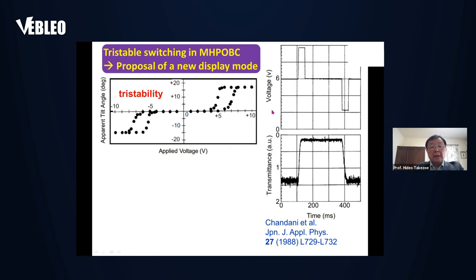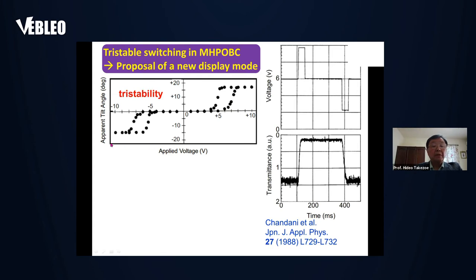More than 10 years after the discovery of ferroelectric liquid crystals, we encountered a peculiar feature in a material named MHPOBC, which was studied to find new ferroelectric liquid crystals. This molecule shows the following behavior: the apparent tilt angle as a function of applied voltage shows three stable states when the electric field is changed from negative to positive. The tilt corresponds to polarization, so this is exactly the same as the double hysteresis loop, which is characteristic of the antiferroelectric phase.